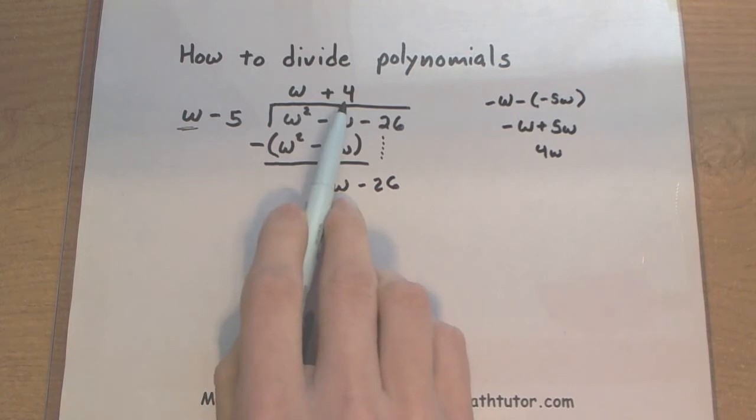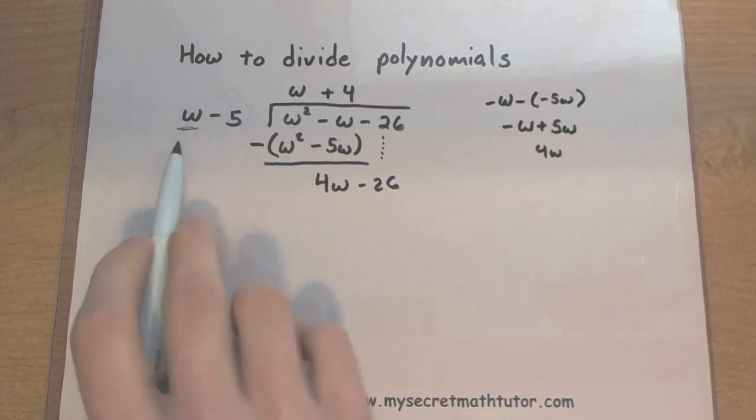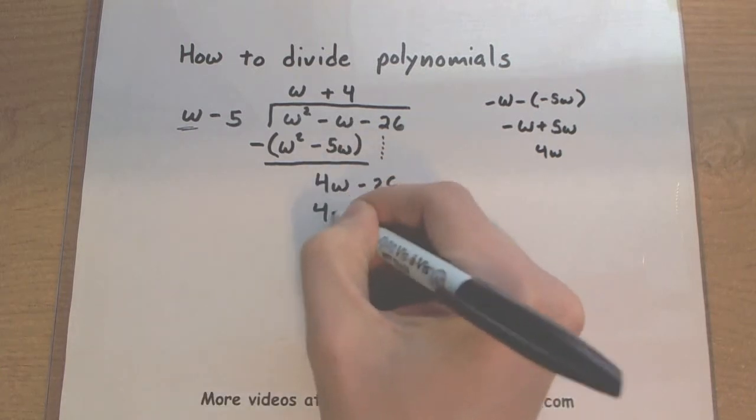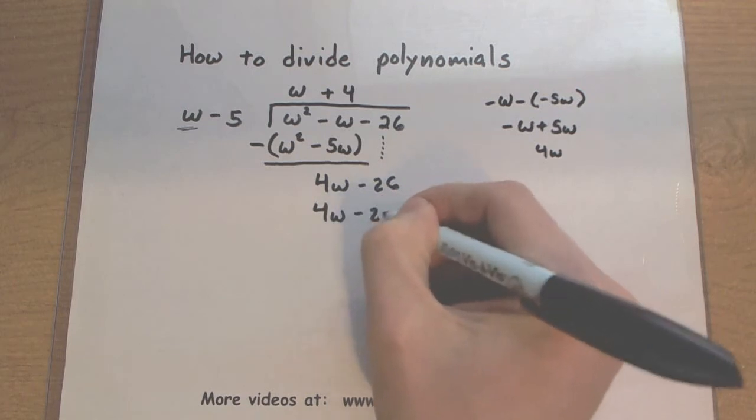Okay, the only thing that will make this happen will be a positive 4. So we take the 4, that's our number up top. We're going to multiply by the w minus 5. So 4 times w, a 4w. And 4 times a minus 5, that's a minus 20.